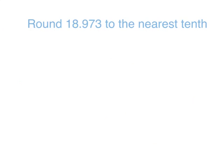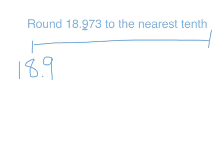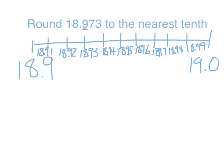Let's look at another example. Round 18 and 973 thousandths to the nearest tenth. Here, I have a 9 in the tenths place. When I look, this number falls between 18 and 9 tenths and 19 and 0 tenths. I can plot the hundredths between these two tenths now. Now that I've plotted my hundredths, I can see that 18 and 973 thousandths would be just past 18 and 97 hundredths.